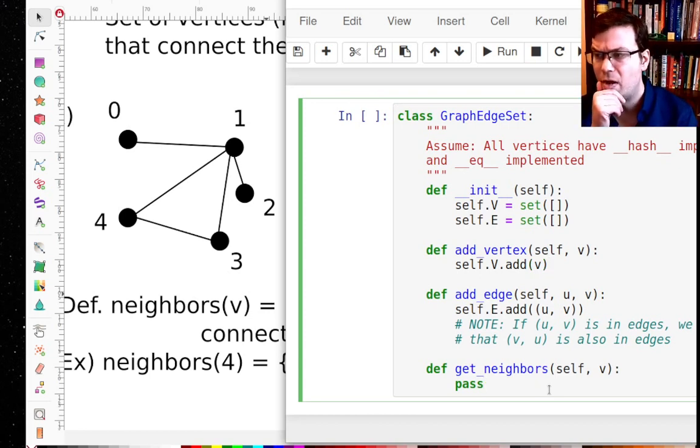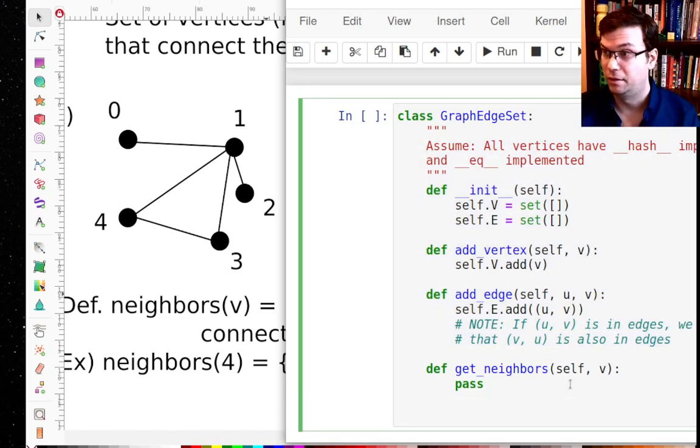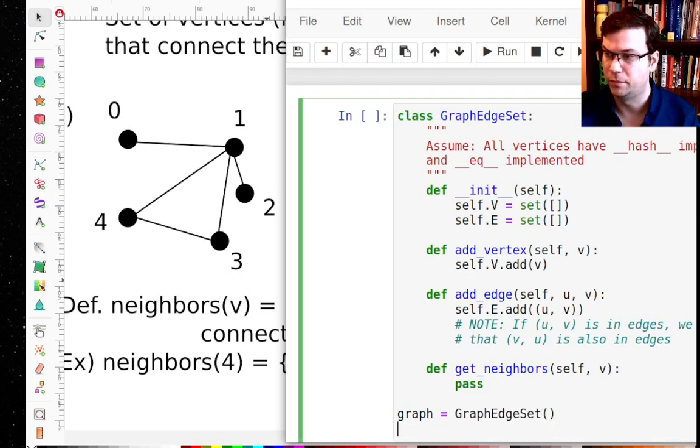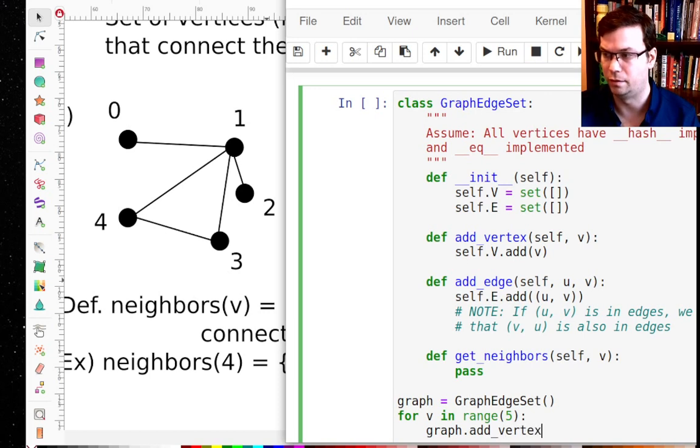All right. Let's think about how to define the get neighbors method. And this is going to show maybe the first downside of this data structure actually. So far it's quite nice, it's very simple. If I were going to add, let's say I make my graph and let's say that I add everything that I've shown in this example here. So I'll say let me call this graph edge set, construct that. And then I'll say graph.add. Well, I know I'm going to add the vertices zero, one, two, three, four. So I'll say for V in range five, graph.add_vertex V.